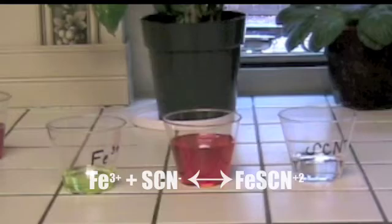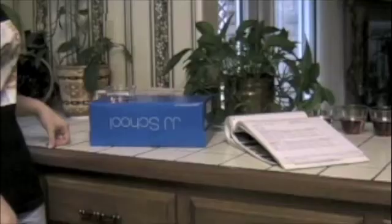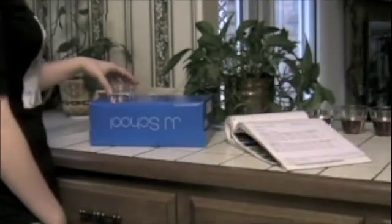The concentration of iron-3 thiocyanate is equal to the amount of thiocyanate ion. After reading the absorbance value of the colorimeter, the percent absorbance is plotted versus the molar concentration of iron-3 thiocyanate complex ion.